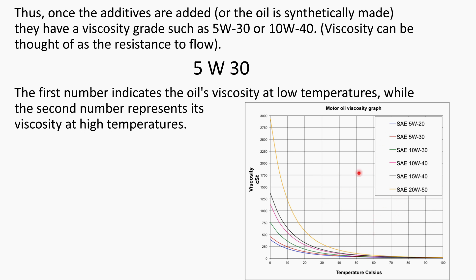Looking at this graph, consider the SAE 20W50 — SAE stands for Society of Automotive Engineers, and they specify how the oil is supposed to behave. The orange line represents 20W50: at very high temperatures the grades converge, but look at the low temperatures — the 20W is considerably thicker than the other grades.